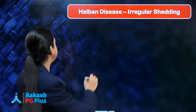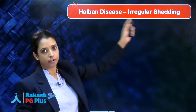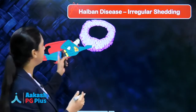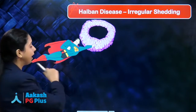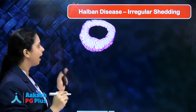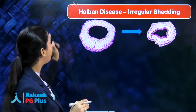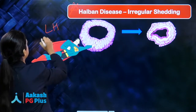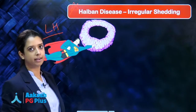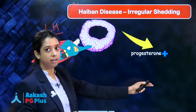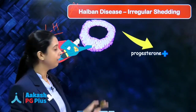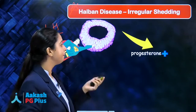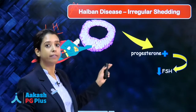In irregular shedding, also called Halban's disease, the corpus luteum forms after ovulation and LH is its savior. Normally, when the luteal phase ends, LH drops and the corpus luteum becomes atretic. But in Halban's disease, LH persists. The main pathology is persistent LH that does not go away. As a result, the corpus luteum also does not become atretic — it stays and keeps secreting progesterone. This progesterone, which should fall at the end of the cycle, continues to be secreted. Because progesterone is persistent, FSH levels do not rise; they keep decreasing.